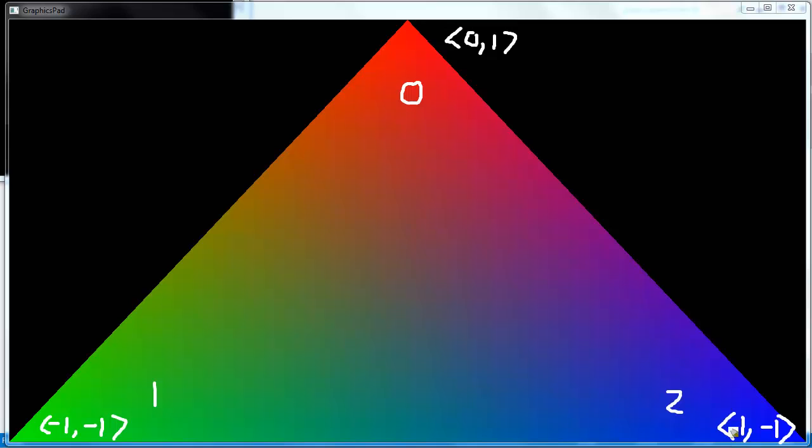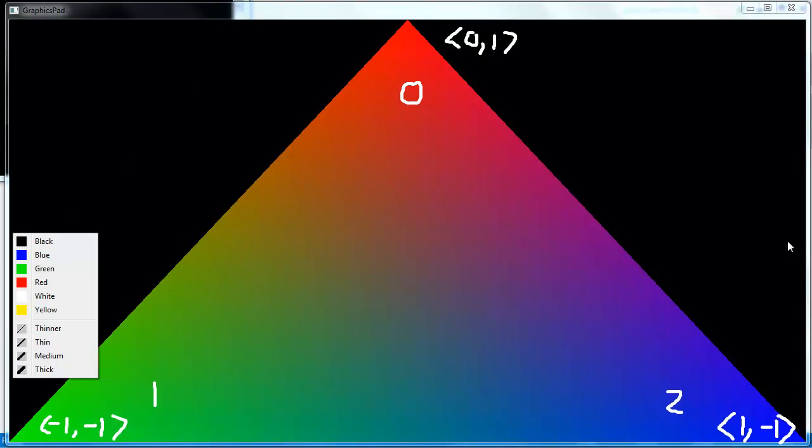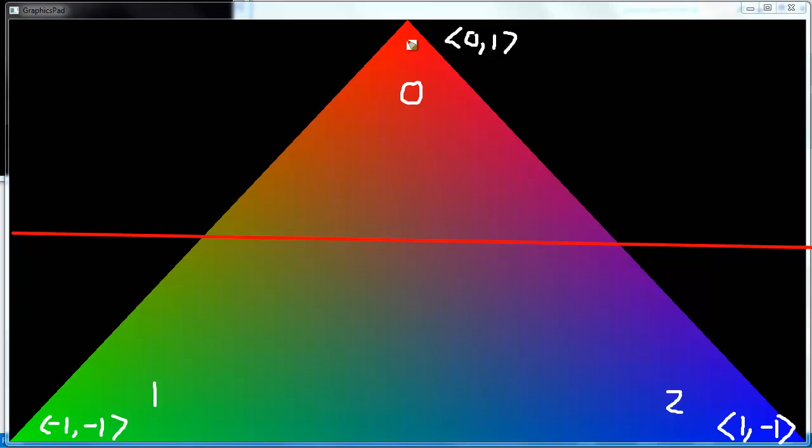We've covered that in several videos, how these are normalized device coordinates. I'll even draw it here. This is roughly the x-axis, the y-axis is vertical here. Negative 1 on the x, 1 on the x, 1 on the y, negative 1 on the y. Our axes are now gone.